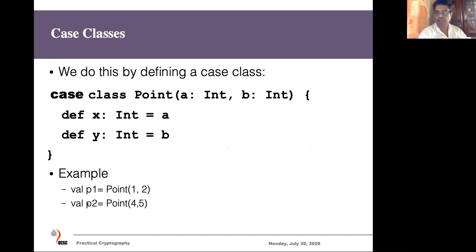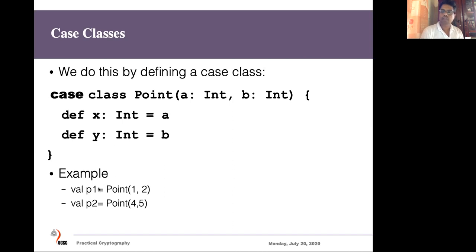To convert a regular class into a case class, you simply put the keyword 'case' before the class keyword. Here we create a case class called Point which has A and B as inputs and two functions returning A and B. If we want to create a point P1, we say 'val p1 = Point(1, 2)' — there is no 'new' keyword. Similarly we can create a point P2 with values four and five. So it creates new data type instances for Point.